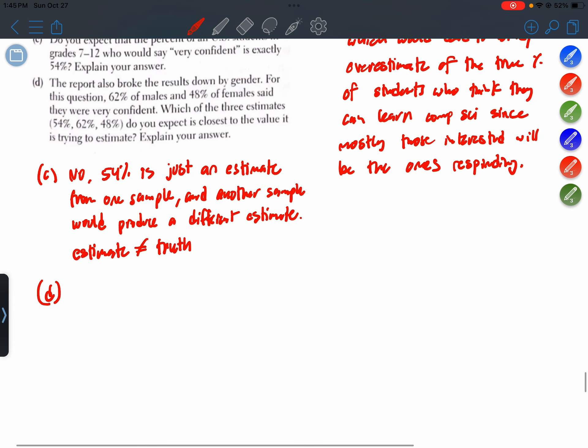Okay, so for that reason, the estimate that comes from both males and females would be the best estimate. So not the 62 because that only is looking at males, and we know our population is more than just males. Not the 48 percent because that estimate came from just females, and we know that our population is more than just females.